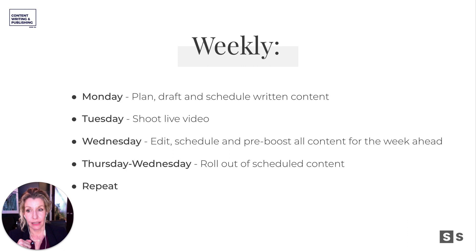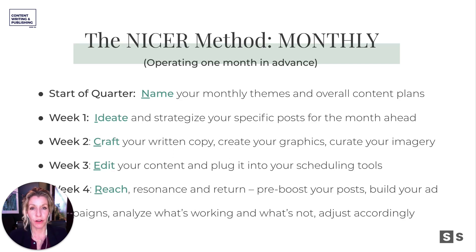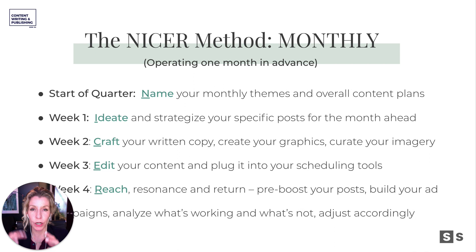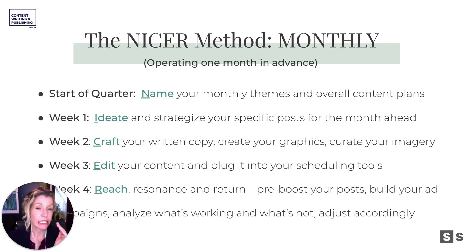Some people like this — they like to work in a shorter batch way — but we prefer the month in advance, where we batch together four weeks of content. Operating one month in advance means that if I'm creating content for March, I am working throughout February to bring it to life so that by the final day of February, that content is scheduled, it's pre-boosted, and it's ready to roll.